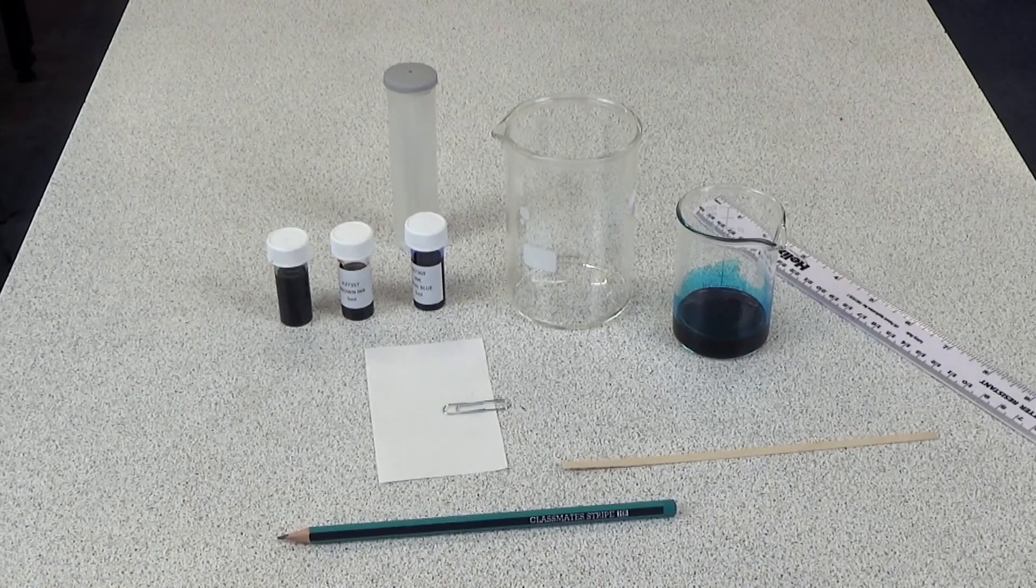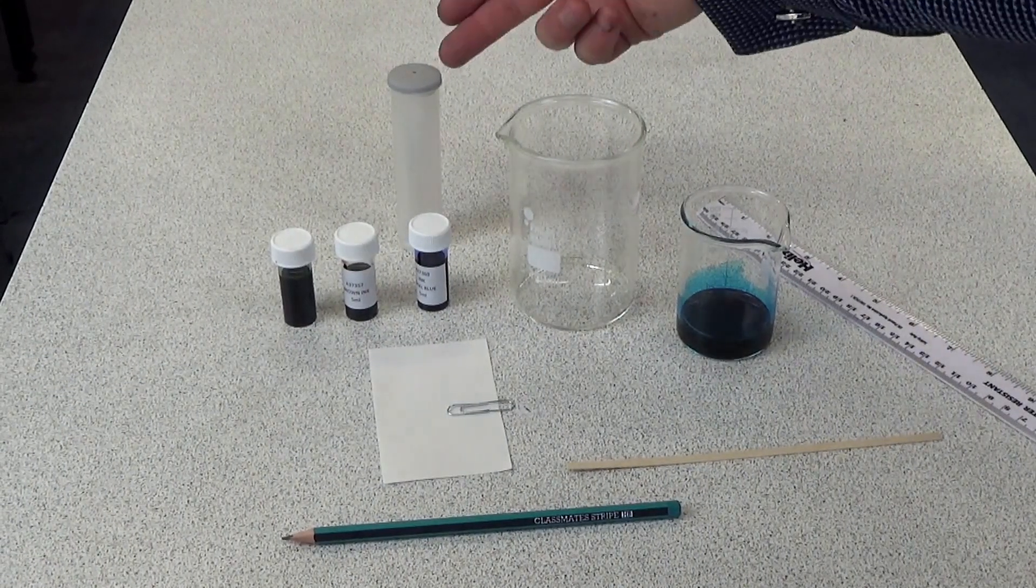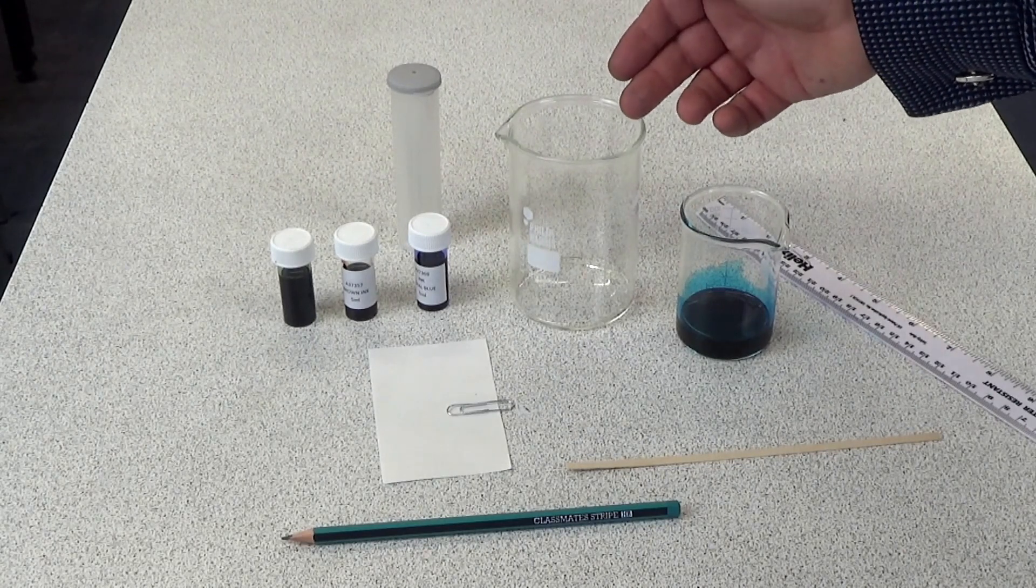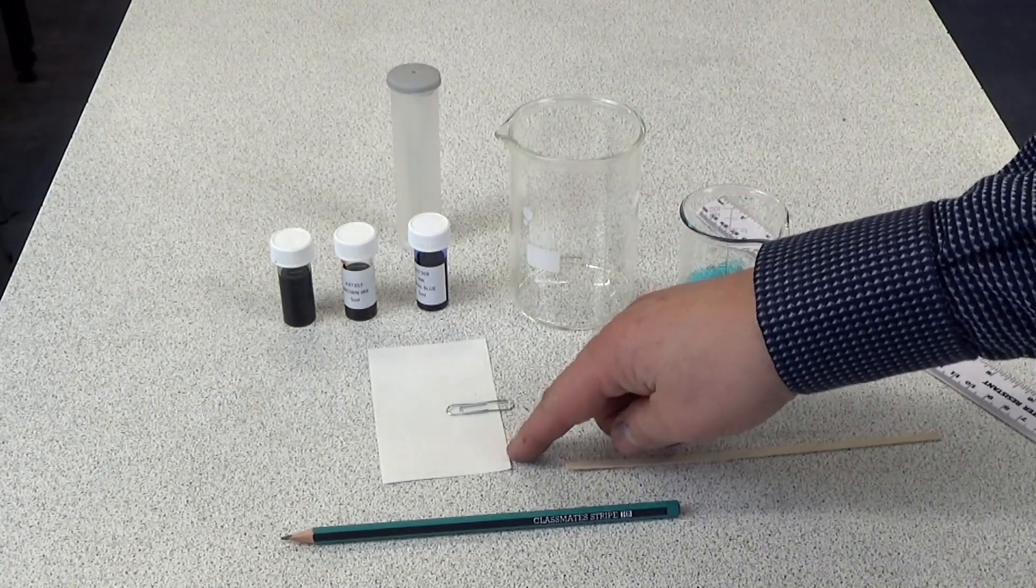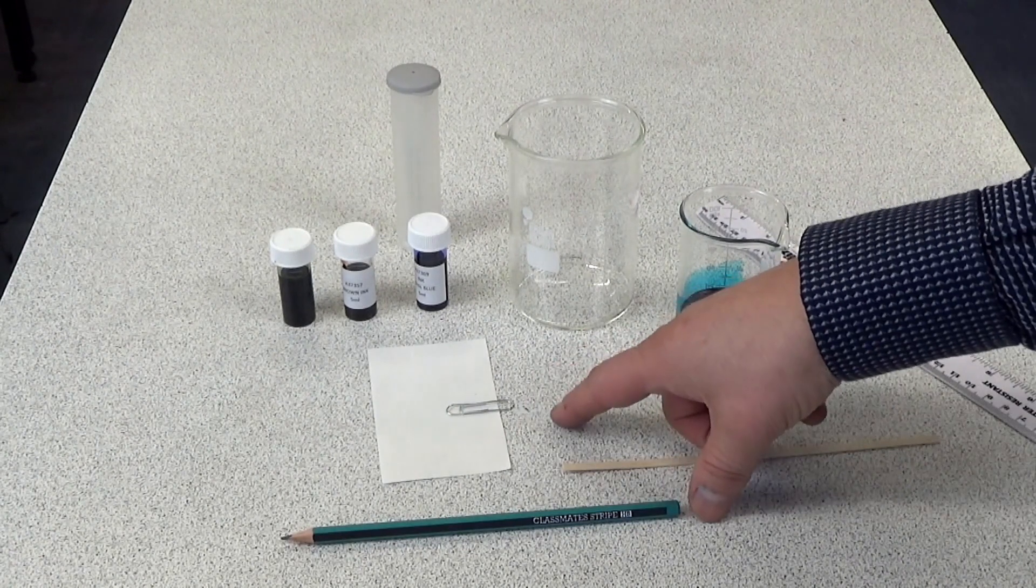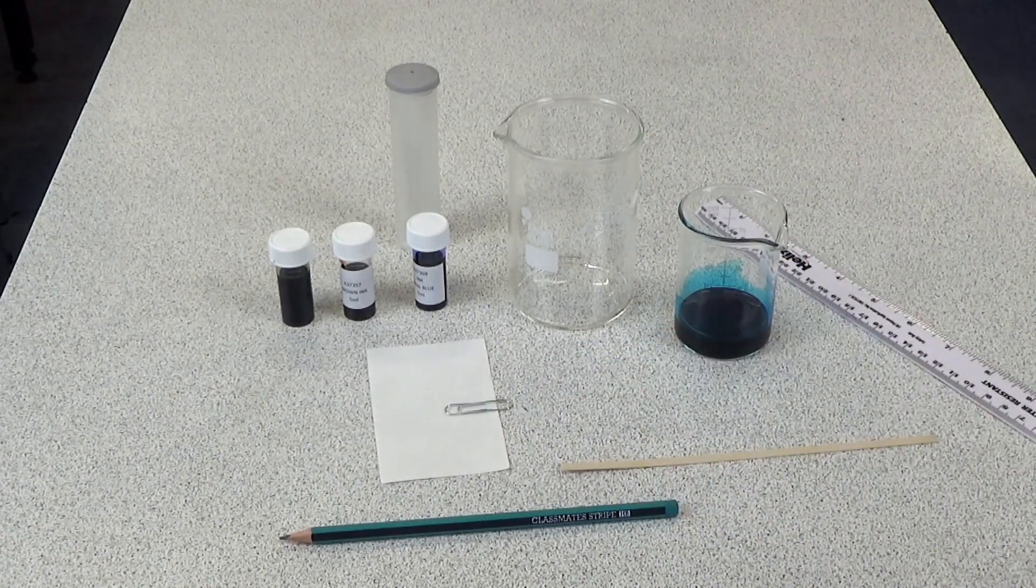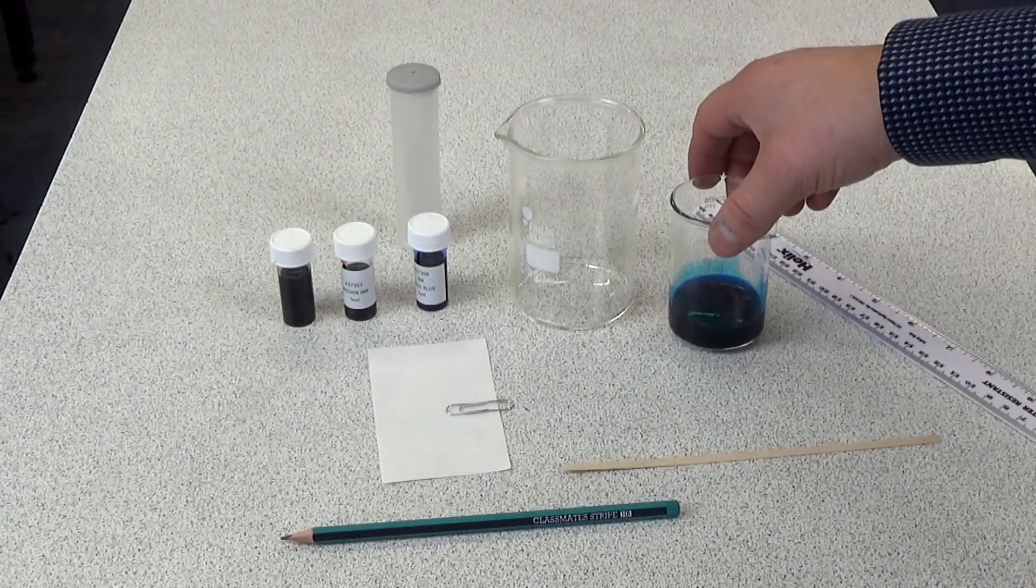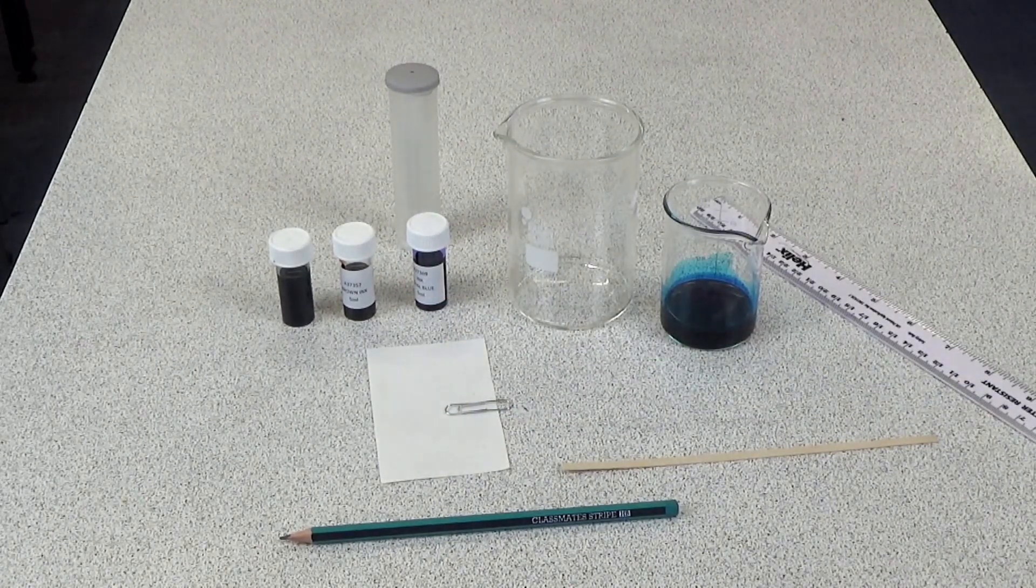For this practical, students will need capillary tubes for spotting, a 250mm beaker, some chromatography paper, a wooden splint and paper clip, pencil and ruler, an unknown food dye and some known samples to compare it with.